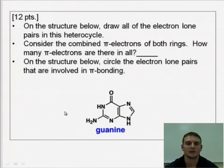If we remember that nitrogens want three bonds and one lone pair, and oxygens want two bonds and two lone pairs, we can quickly fill in all the lone pairs on the guanine structure, as shown here.